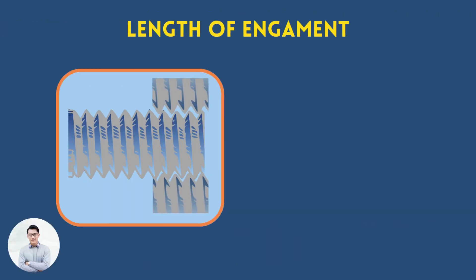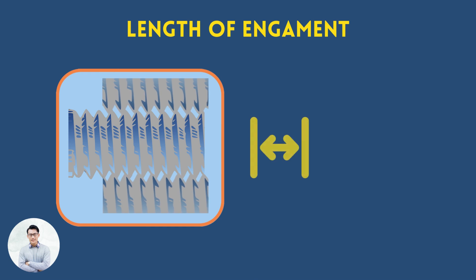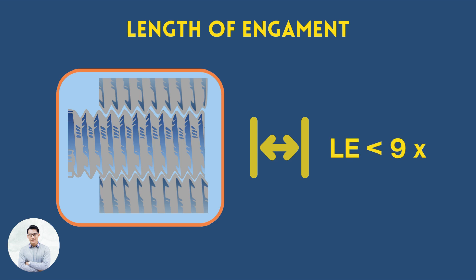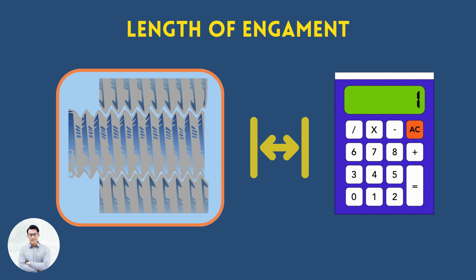As it gets longer, the tolerances of a thread need to be tightened to maintain proper thread assembly. Most threading standards are valid only up to a maximum length of engagement, and beyond that, special calculations need to be applied.